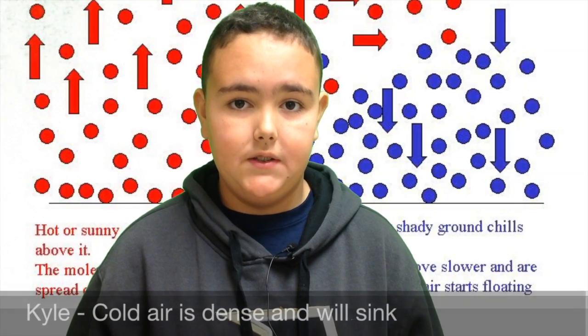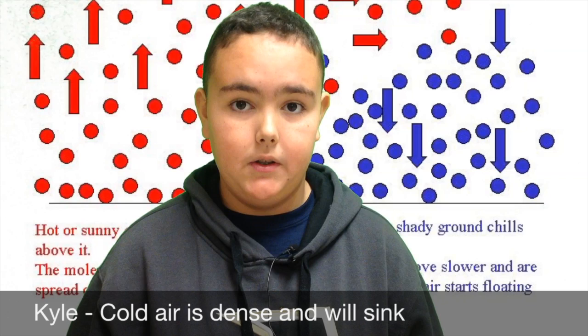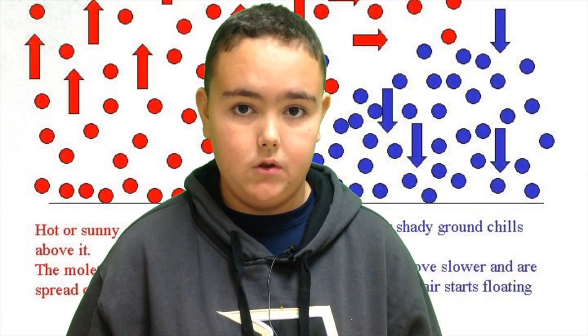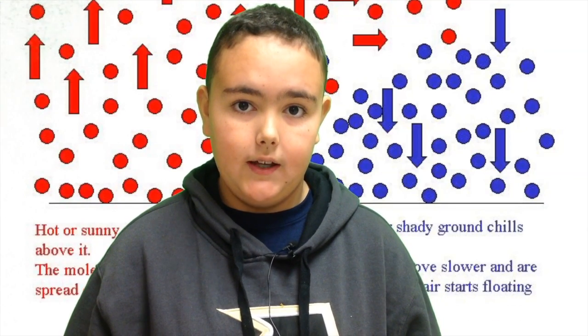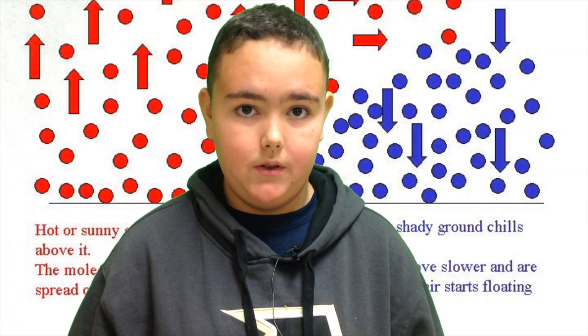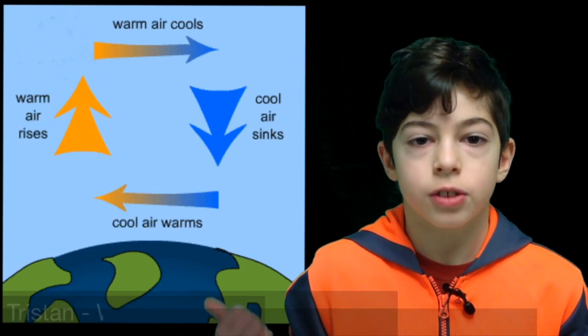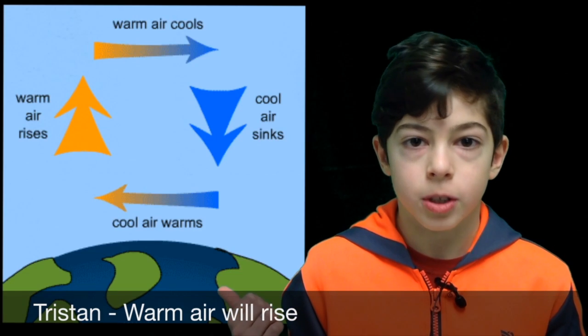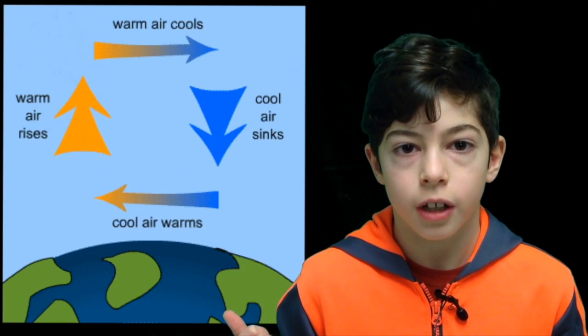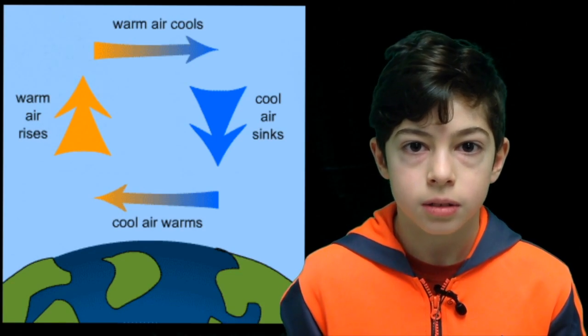The red and blue dots in the picture behind me represent cold and warm molecules of air. As you can see, the cold molecules are sinking. That is because cold air is denser than warm air and will sink. From the picture next to me, warm air is less dense than cold air and will rise.